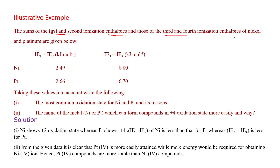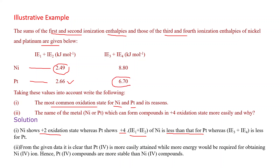Now an example: the sums of the first and second ionization enthalpies, and those of the third and fourth ionization enthalpies, of nickel and platinum are given. The most common oxidation state for nickel is +2 and for platinum is +4. For nickel, the sum of the first two ionization enthalpies is less than that for platinum, and for platinum the sum of the third and fourth ionization enthalpies is less — that's why Ni favors +2 and Pt favors +4.